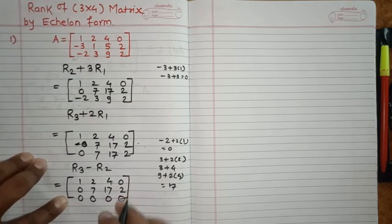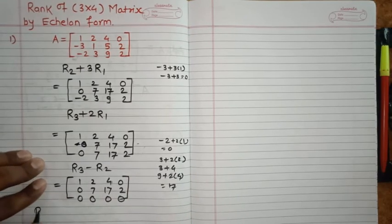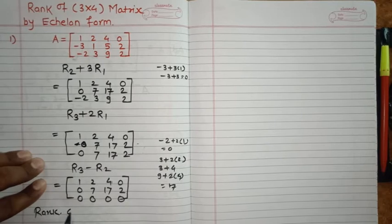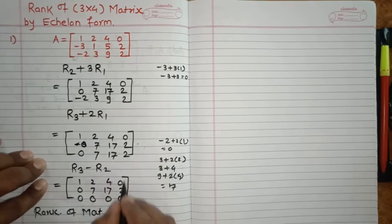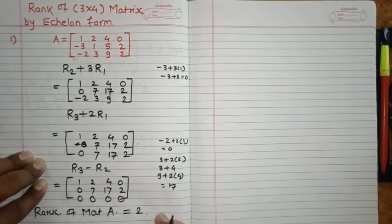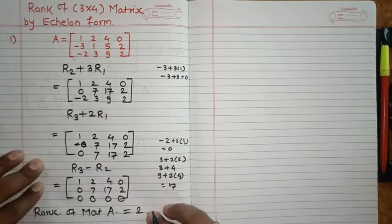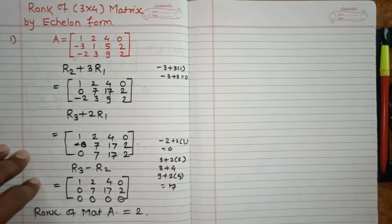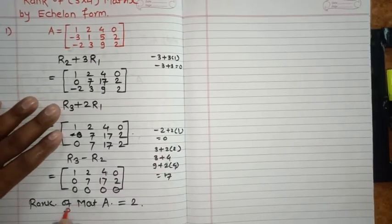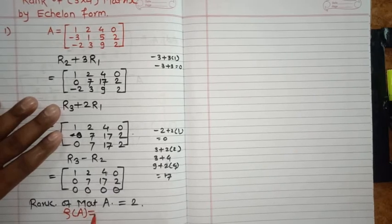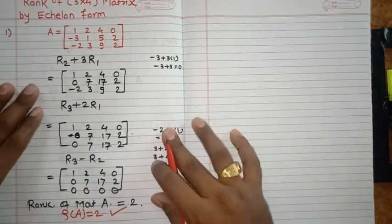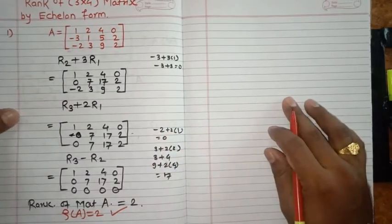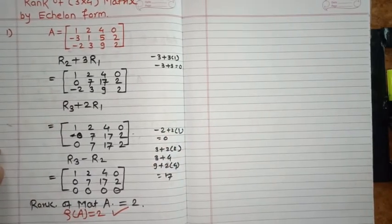Therefore we can say that the rank of matrix A is equal to 2, because the number of non-zero rows is 2. So rank of matrix A is 2, that is our answer. Please do subscribe my channel for next videos. Thank you.